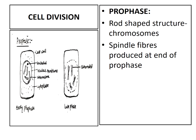In animal cells, the achromatic apparatus — which consists of centrioles, astral rays, and spindle fibers — is produced. The chromosomes then show connecting associations with the spindle fibers. There are clear differences between plant cells and animal cells during this phase.